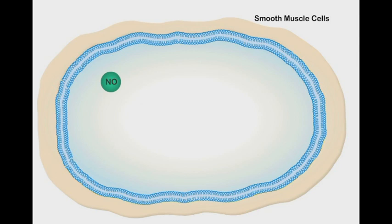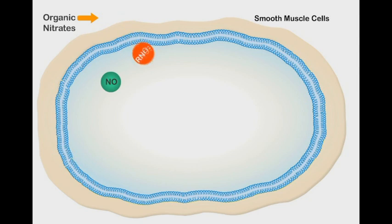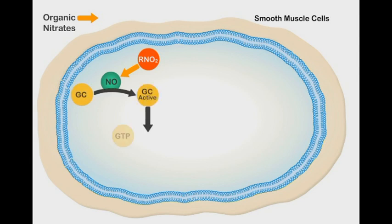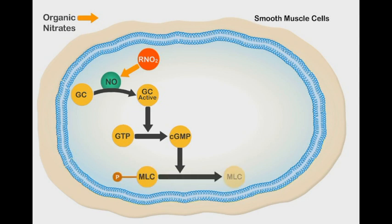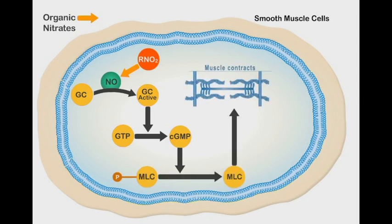Pharmacological nitric oxide donors, such as organic nitrates, pass through smooth muscle cells and release their nitric oxide into their cytoplasm. The external nitric oxide mimics the physiological functions of indigenous nitric oxide, which ultimately results in smooth muscle relaxation.